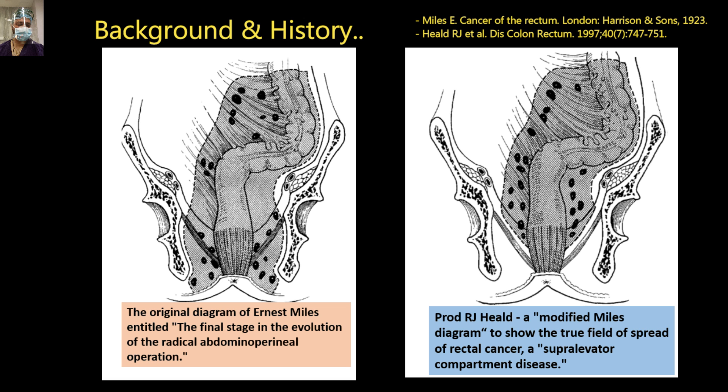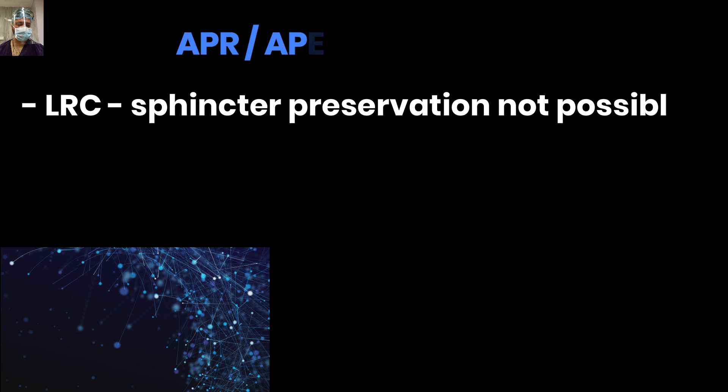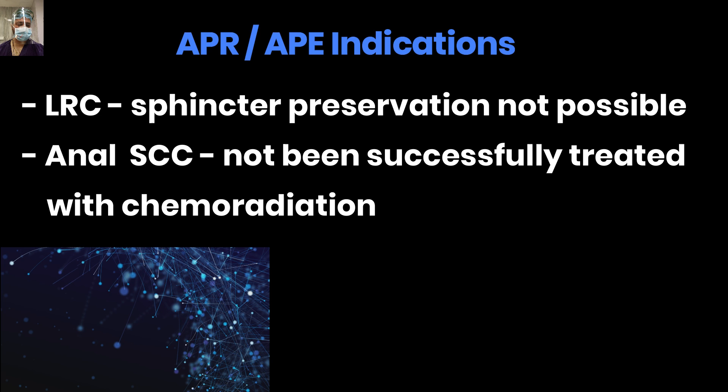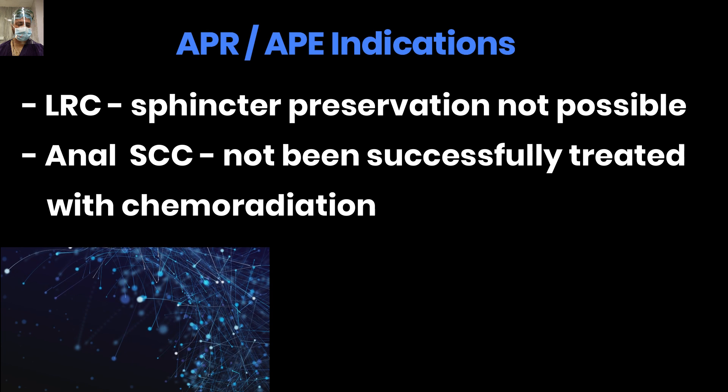There are only two indications for abdominal perineal excision: first, lower rectal cancer where sphincter preservation is not possible — in the present era we would not operate a T2 or above rectal cancer without neoadjuvant chemoradiotherapy, so when sphincter preservation is not possible or when the cancer is directly invading the sphincter; and second, anal squamous cell carcinoma that has not been successfully treated with chemoradiation.